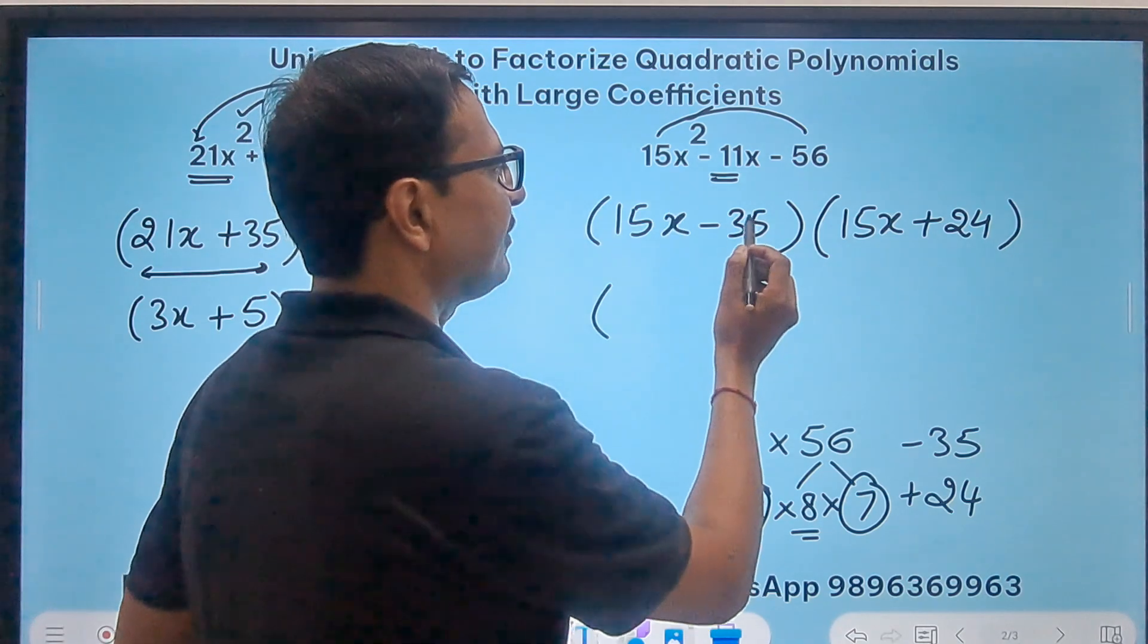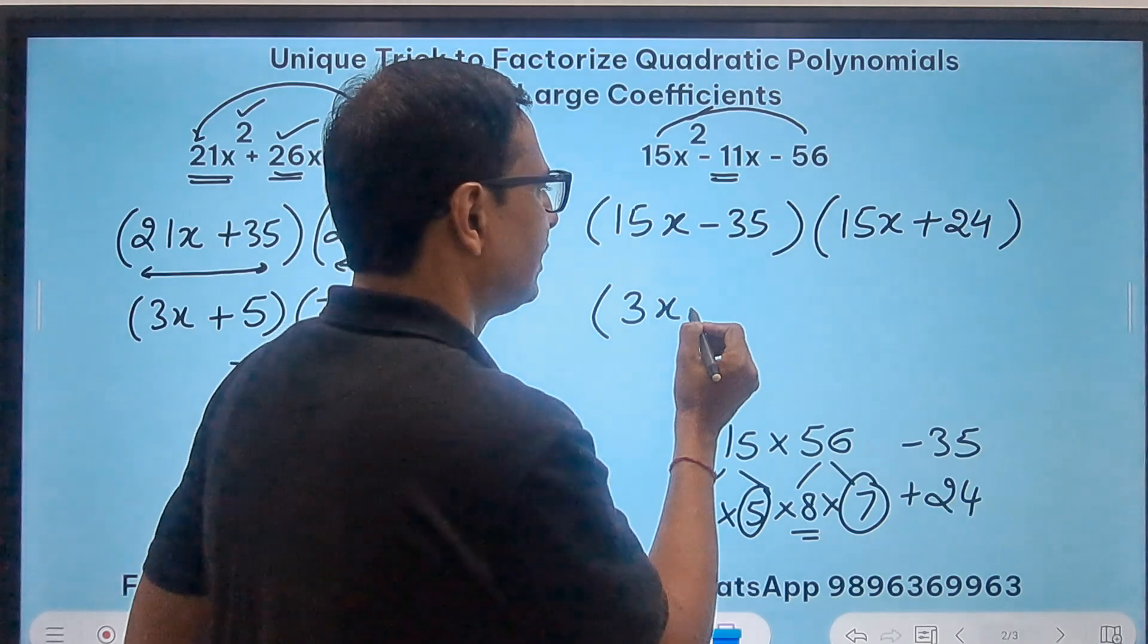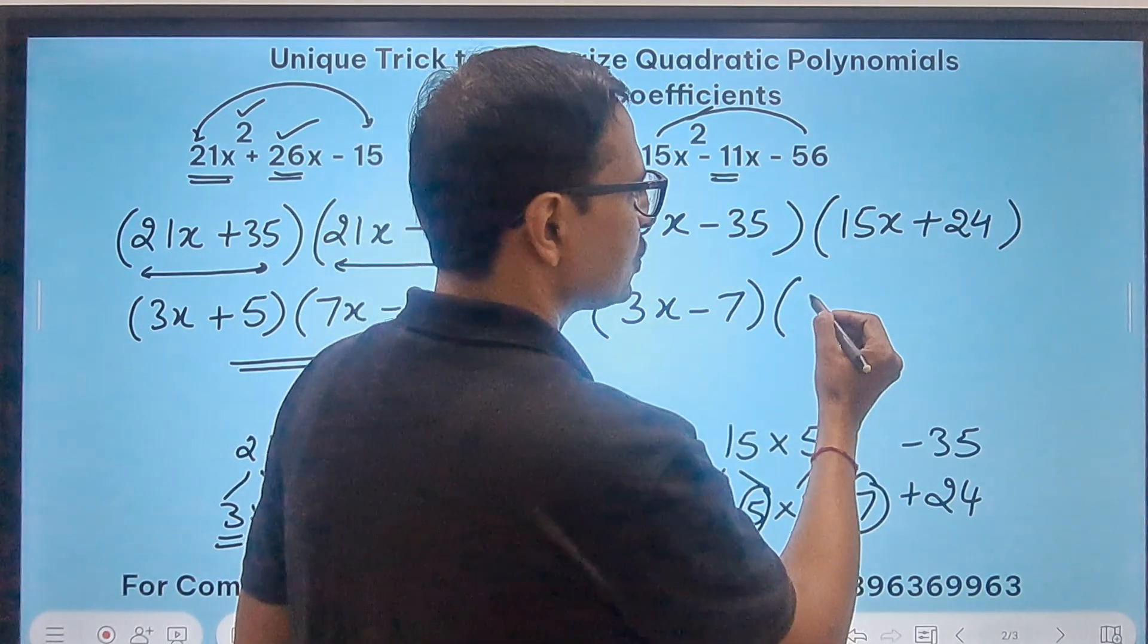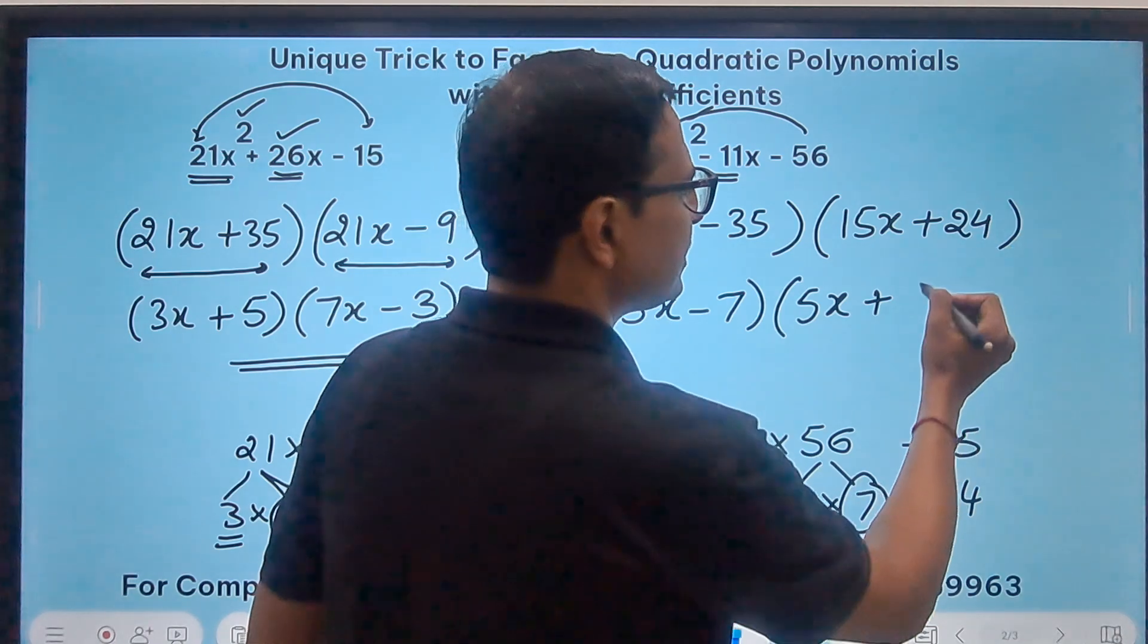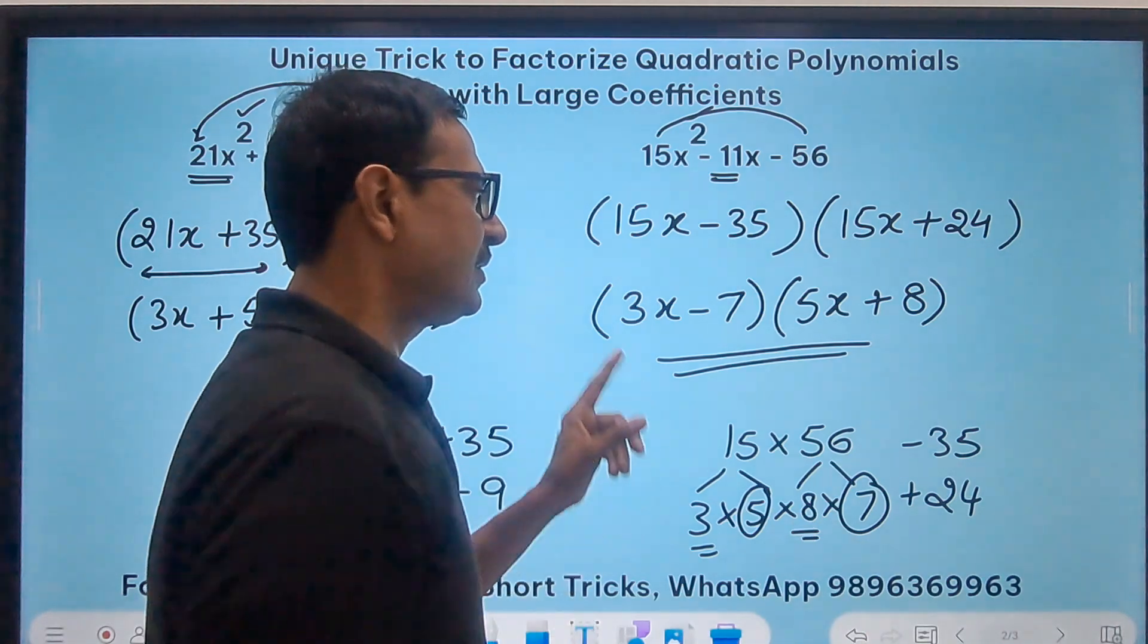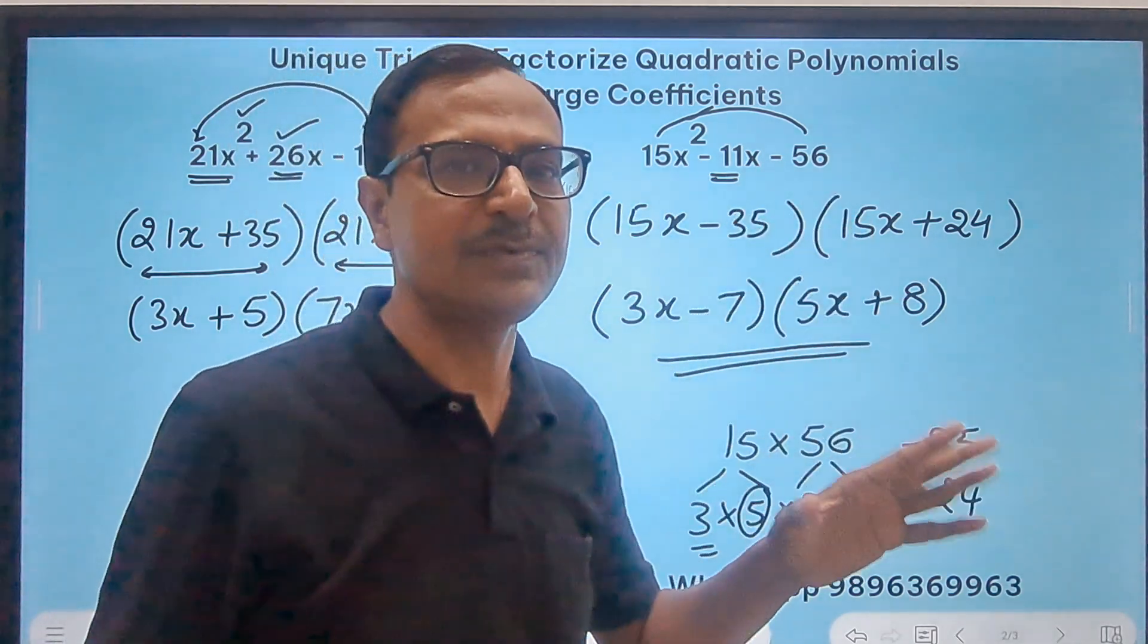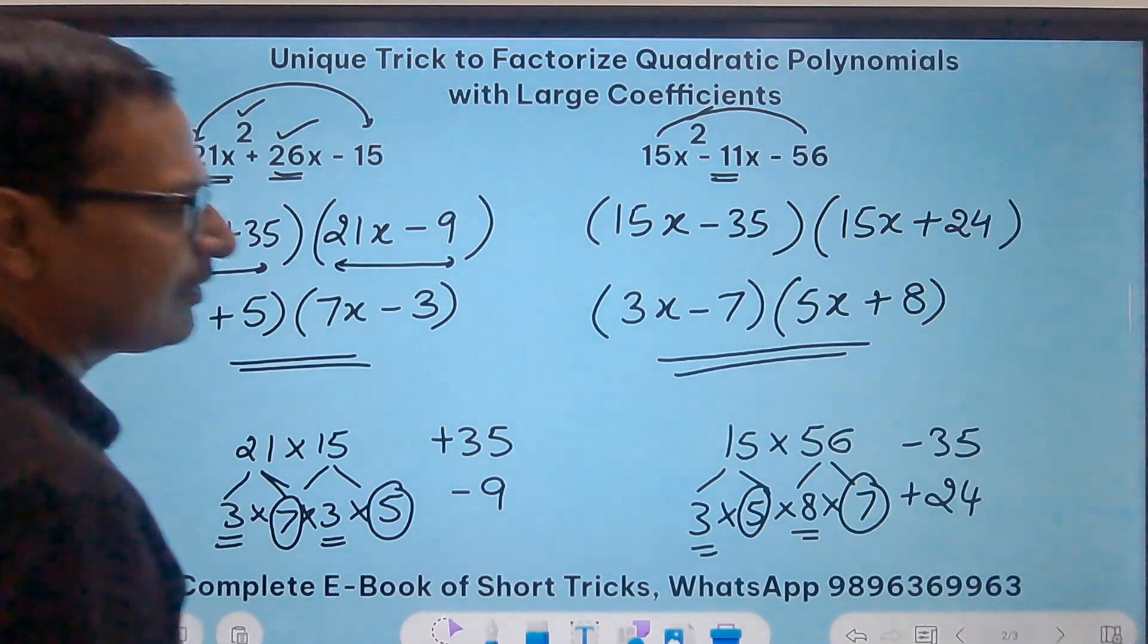Now finally remove the common factors, the highest common factor. 15 and 35 divisible by 5. So this becomes divide by 5 means 3x. Divide by 5 means 7. 15x and 24 I think divisible by 3. So if you divide this by 3 you get 5x and divide this by 3 you get 8. And since there are no more common factors in the two brackets, this is the factorization of the huge polynomial 15x square minus 11x minus 56. Likewise we can go on and on and solve so many different problems.